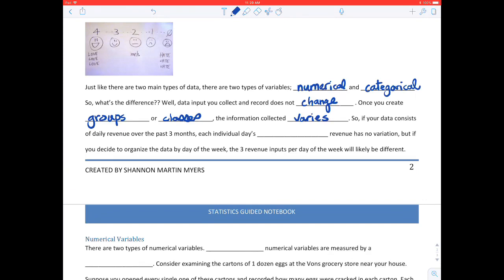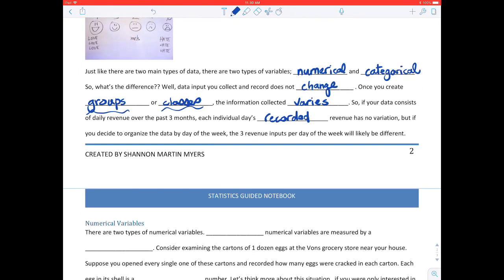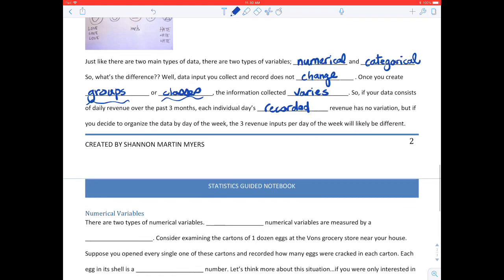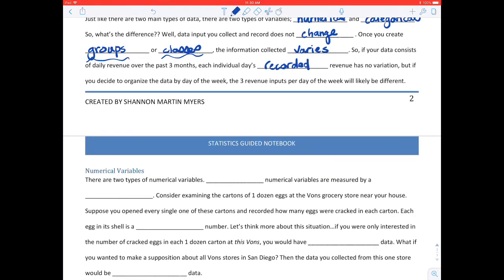So again, that's within the group or the class. For example, if your data consists of daily revenue over the past three months, each individual day's actual revenue has no variation. If you sold 1,500 bucks worth of shoes on a Tuesday, Tuesday the 21st of August 2018, then that's not going to change. But if you decide to organize the data by day of the week and you look at the totals for each Tuesday over the last several or three months, the three revenue inputs per day of the week will likely be different, won't they? So that's where the variation comes in.